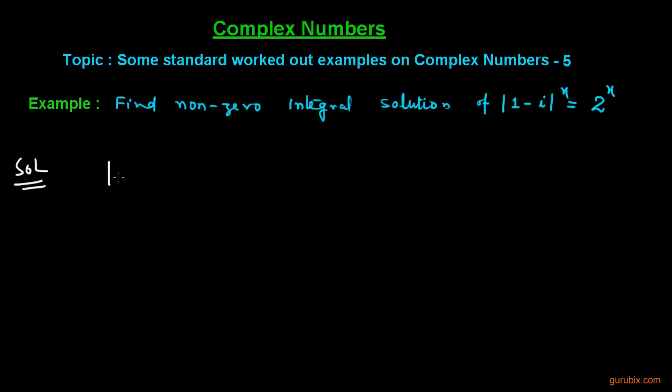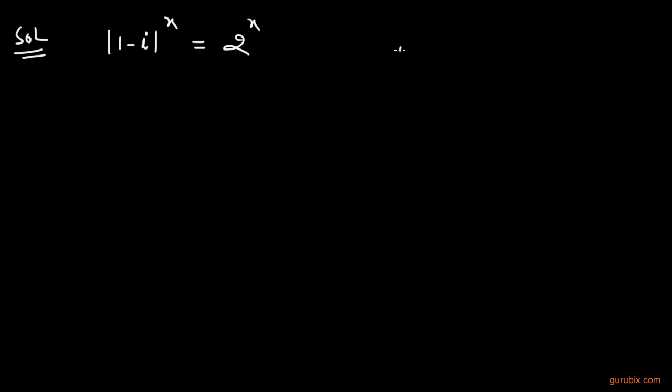We are given |1 - i|^x = 2^x, and now we have to find the modulus of the given complex number. We are given z = 1 - i.